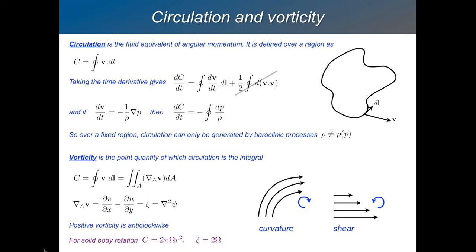The circulation can't change except through baroclinic processes, but the vorticity can, because the circulation is the integral of the whole thing over the whole area — and this area can change size. Imagine dropping a necklace into the flow. As it gets smaller, in a barotropic fluid it has to conserve its circulation, which means vorticity is concentrated into a smaller area, so vorticity must increase. Or as it gets bigger, the vorticity must decrease. To conserve circulation, you must change your vorticity when you have divergence and convergence. This is how you generate vorticity through divergence.